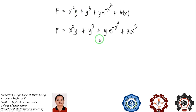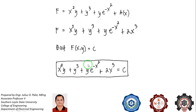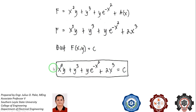Substituting 2x cubed for a of x and rewriting, since f equals C, our final answer is x squared y plus y cubed plus y e to the negative x squared plus 2x cubed equals C. This is our general solution to the exact differential equation.